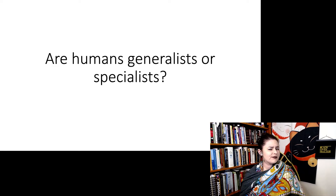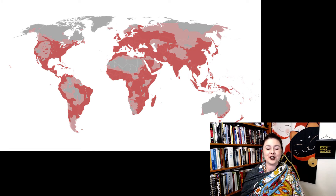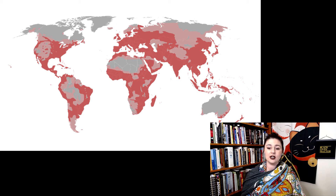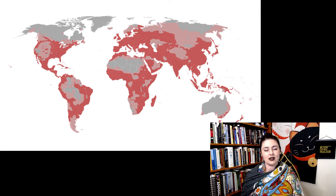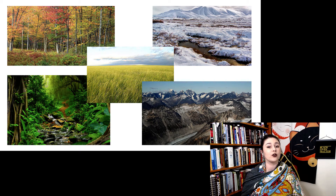So when you think about humans — are humans generalists or specialists? Here's a map of where you can find humans. The darker red is where you can find more people, the lighter red is fewer people, and gray is where there's hardly anybody. Humans tend to avoid the northernmost parts of Russia and Canada, and also the middle of deserts like the Sahara and the middle of Australia. But you might notice that humans are everywhere — so just looking at that, humans would be considered generalists because we are found in a variety of different places.